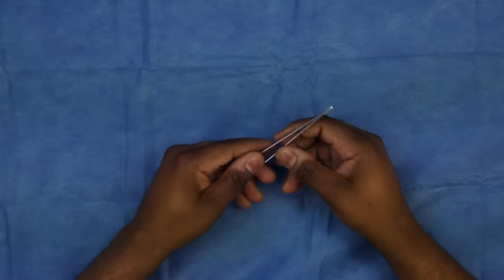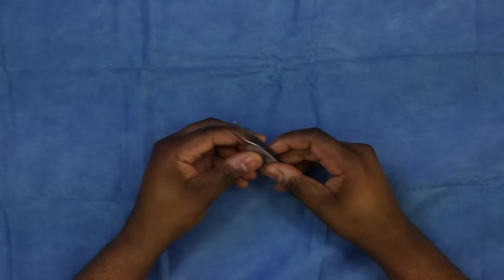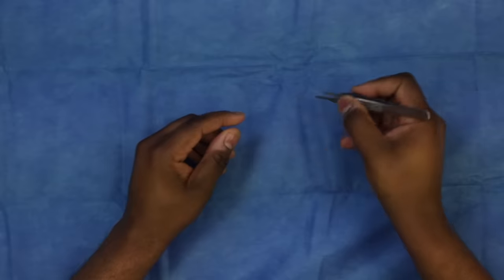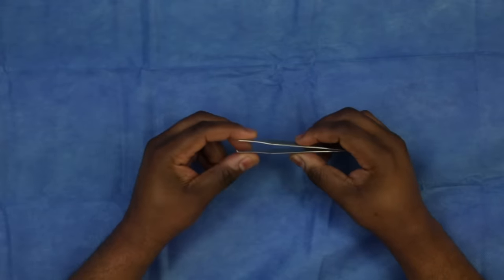The next instrument that we have is the Addison Pickup. This is an instrument that we use to grab tissue or to grab the suture itself. It has little teeth at the end here, and you basically hold it like a pencil when I'm suturing. This is how I hold the Addison Pickup.